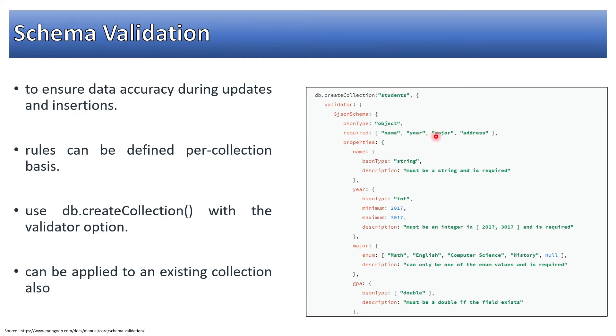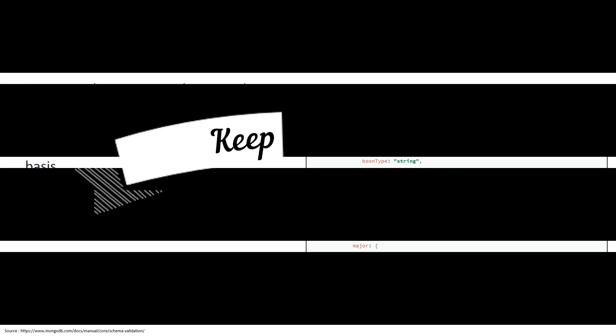Now what all fields are required: name, year, major, address, properties. I can now define this name to be a part of string description for future understanding. Here I want it to be an int, minimum value, maximum value. Then major, I am talking about enum part, so it will accept either four of these values or null. Then GPA double. So this way I can impose schema validation here.